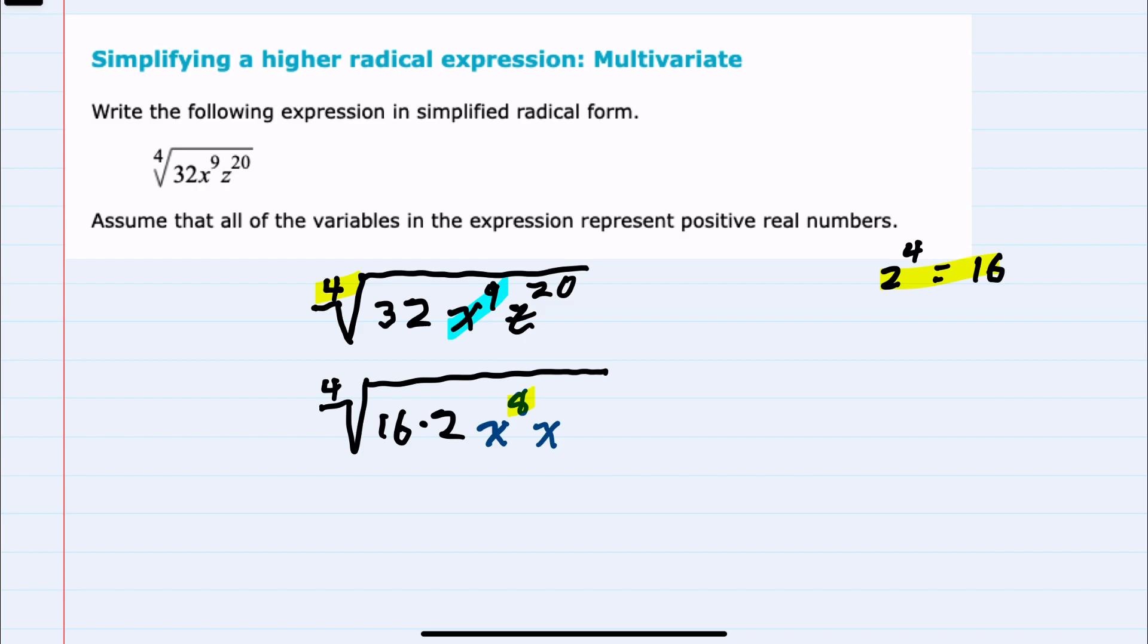For the z, 20 is already a multiple of 4, so I'll leave that as is.